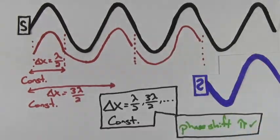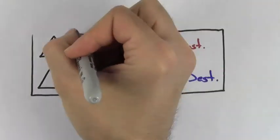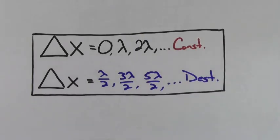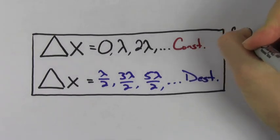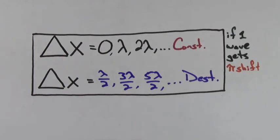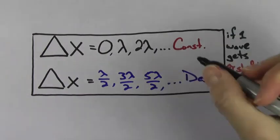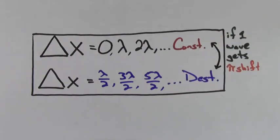Recapping: path length differences equal to a whole number of wavelengths are constructive. Path length differences equal to half-integer wavelengths are destructive, unless one of the waves is phase shifted by pi, in which case you reverse the conditions — half-integer wavelengths give constructive and whole-integer wavelengths give destructive.